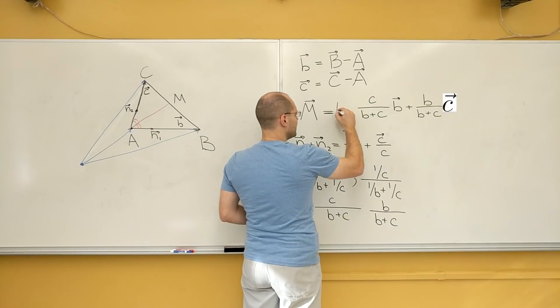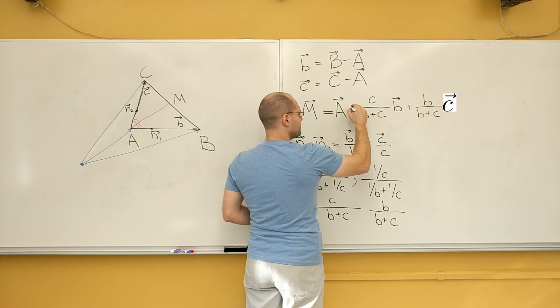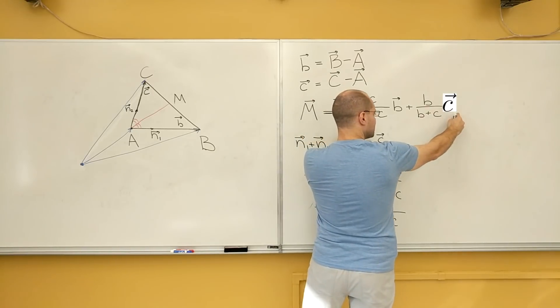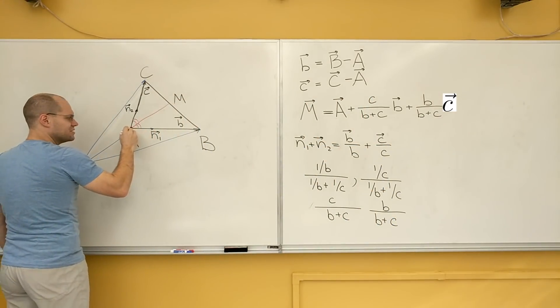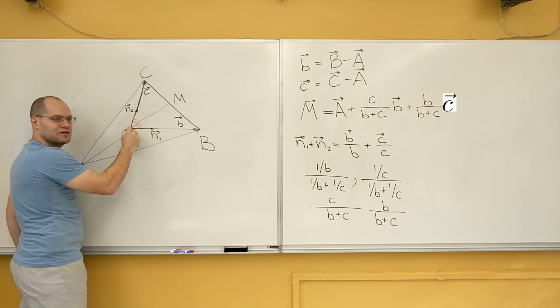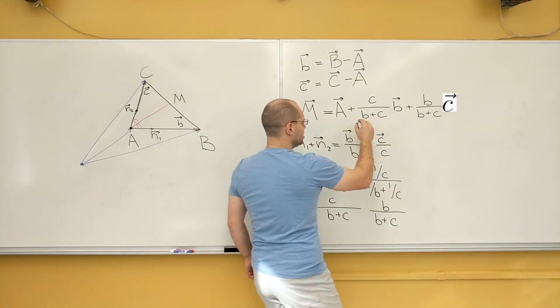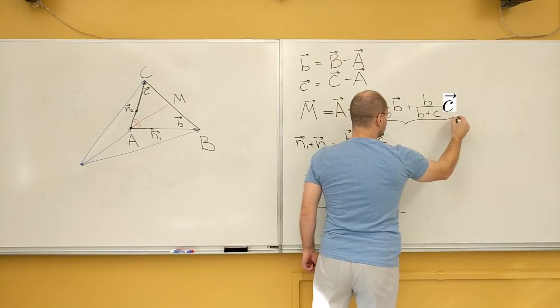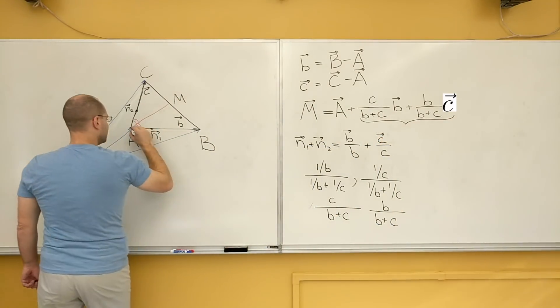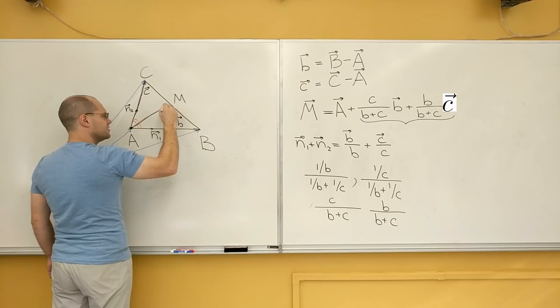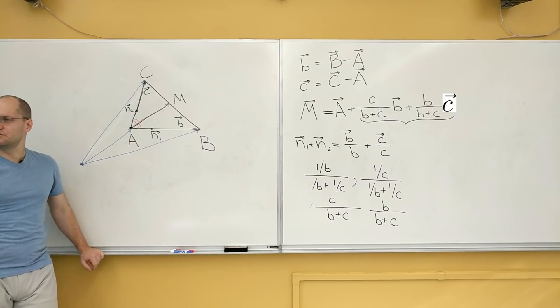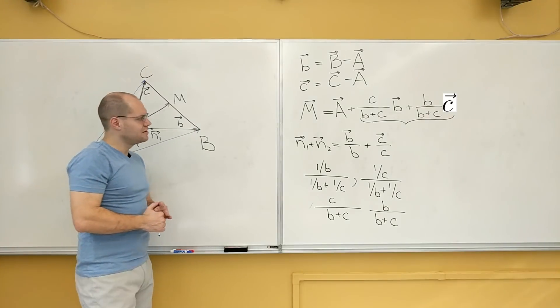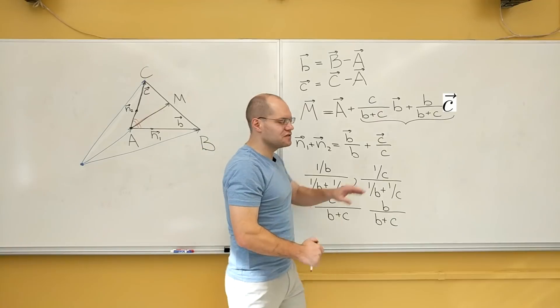And to this we must add vector A because what this expression is, is relative to this point right here. Do you see our vectors b and c come out of this point? So this portion of the expression is this vector right here that I have in red. So if I want to refer it back to our common origin, I need to add capital A to it. Okay? And that's the expression for the bisector.